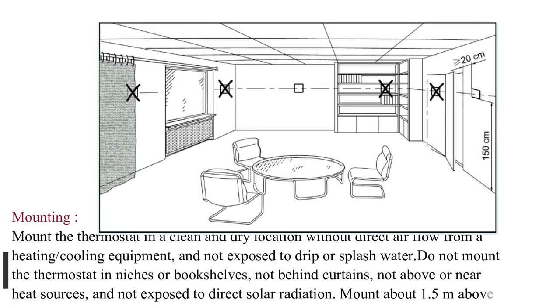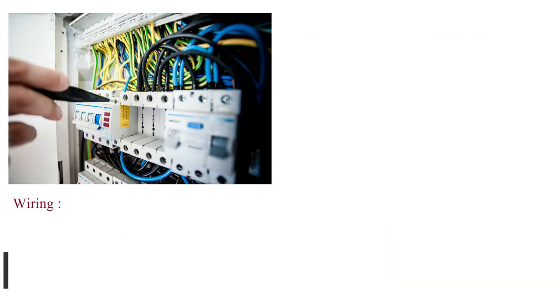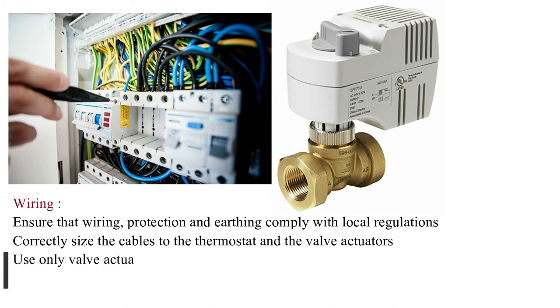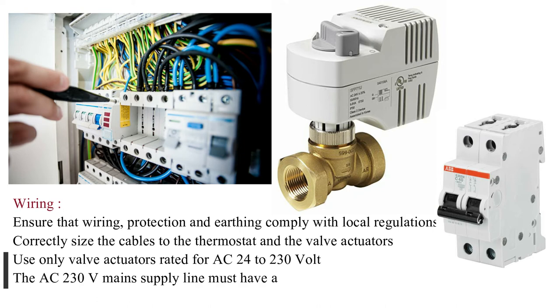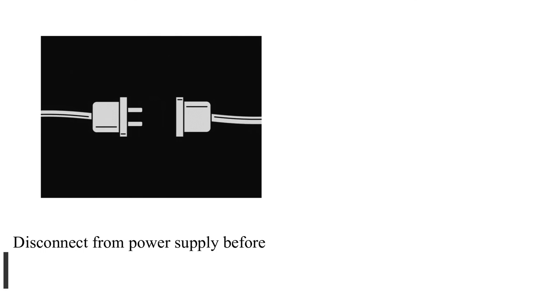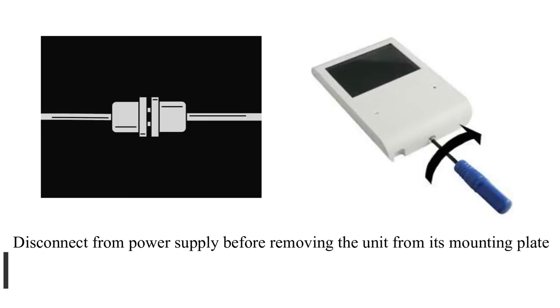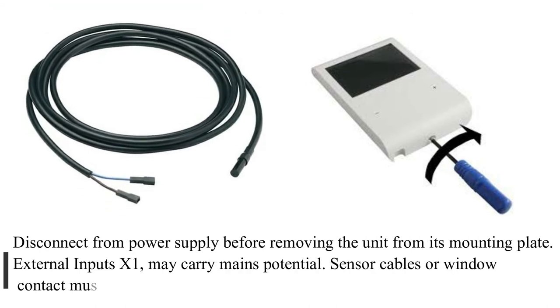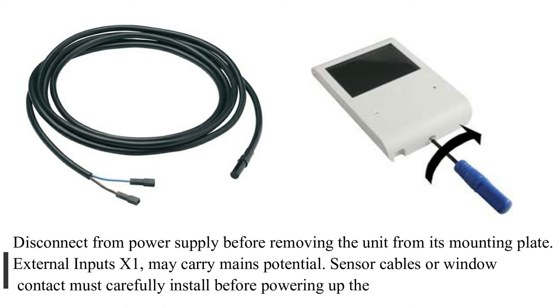Wiring: Ensure that wiring, protection and earthing comply with local regulations. Correctly size the cables to the thermostat and the valve actuators. Use only valve actuators rated for AC 24 to 230 volt. The AC 230V main supply line must have a circuit breaker with a rated current of no more than 10 amps. Disconnect from power supply before removing the unit from its mounting plate. External inputs may carry mains potential. Sensor cables or window contact must be carefully installed before powering up the thermostat.